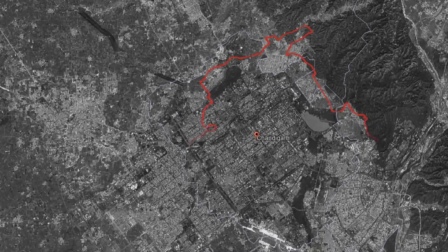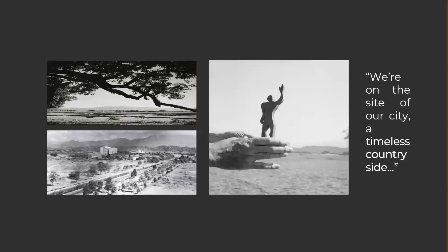This case study is set in Chandigarh. When Corbusier proposed his vision for Chandigarh, he aimed to create a city that merged the serenity of the countryside with the efficiency of urban development. The city's planning incorporated different organs, reflecting a holistic approach to urban development.